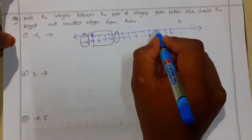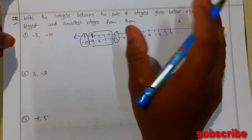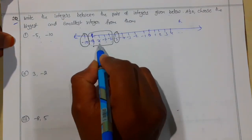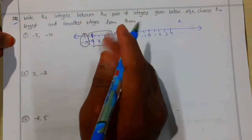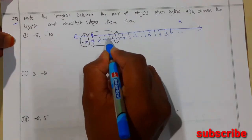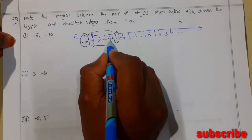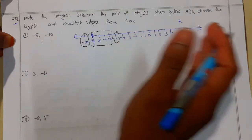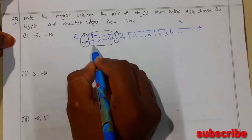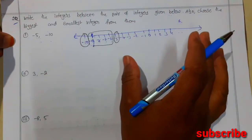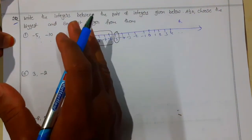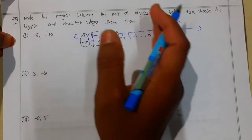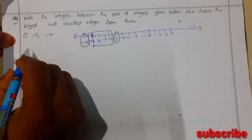As we discussed in the previous problem, the number which is on the right side is the greater one. Among these four numbers, the rightmost number is minus 6, so minus 6 is the greatest. The leftmost number among these four is minus 9, so that is the smallest one.